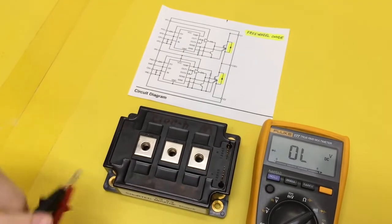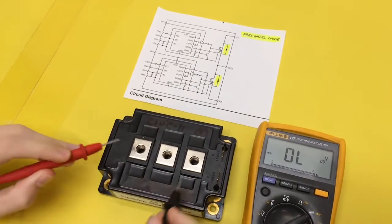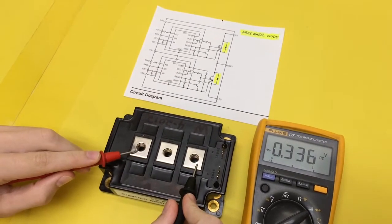So you just find C1E1 and then swap your meter leads. And then that reads good.